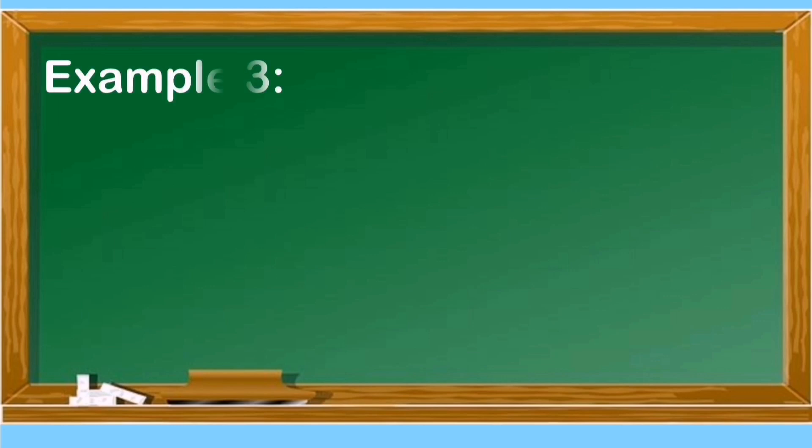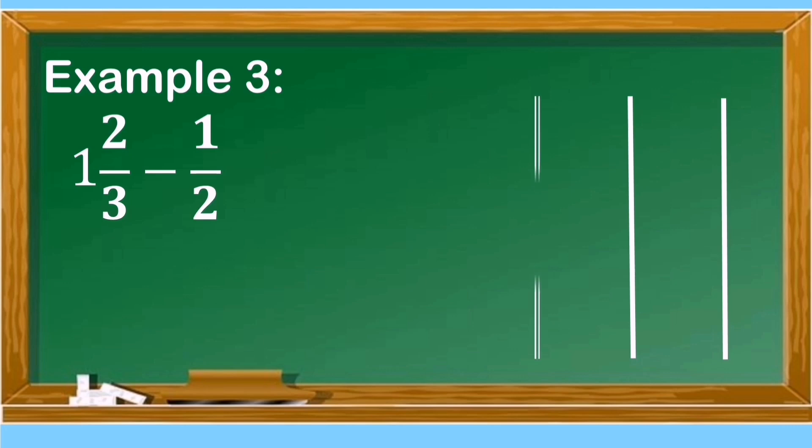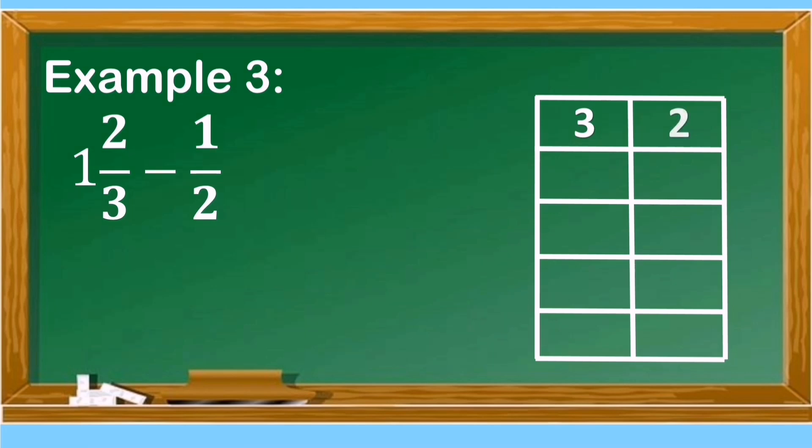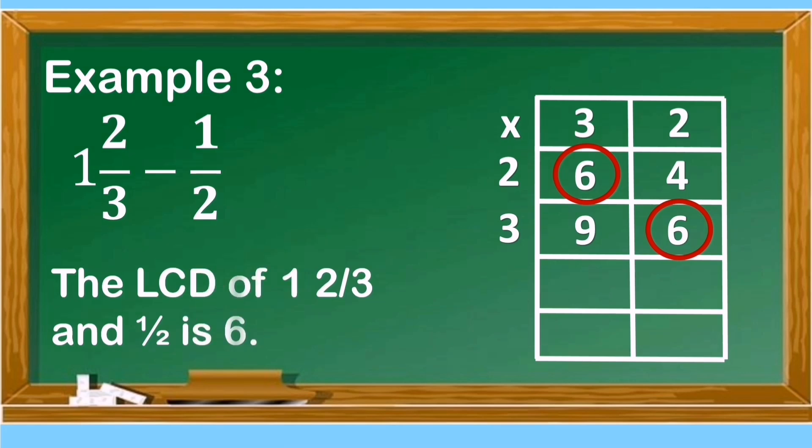Example number 3, 1 and 2/3 minus 1/2. We will find again the LCD of 3 and 2. We will use the same process. 2 times 3 is 6, 2 times 2 is 4, 3 times 3 is 9, 3 times 2 is 6. So the LCD of 1 and 2/3 and 1/2 is 6.